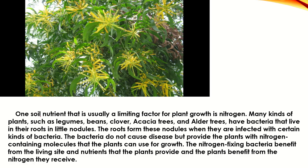Soil nitrogen is usually a limiting factor for plant growth. Many kinds of plants, such as legumes, beans, clover, acacia trees, and alder trees, have bacteria that live in their roots in little nodules. Roots form these nodules when infected with a certain kind of bacteria. The bacteria do not cause disease, but provide the plants with nitrogen-containing molecules that the plant can use for growth. The nitrogen-fixing bacteria benefit from the living site and nutrients the plants provide, and the plants benefit from the nitrogen they receive.